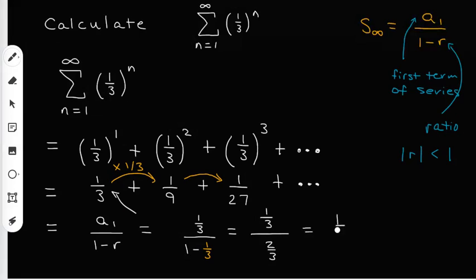So now I've got a fraction divided by a fraction, which means I can flip the bottom fraction over and just multiply from there. So one-third times three halves, we can cross out the threes, and we're left with one-half for our answer.